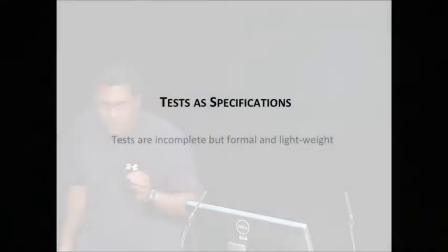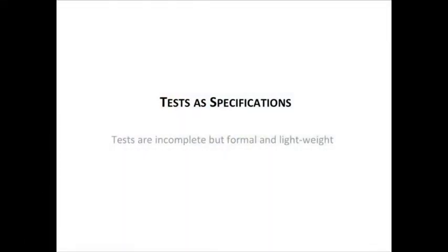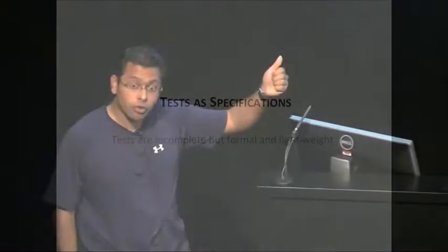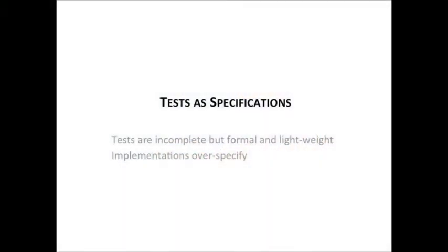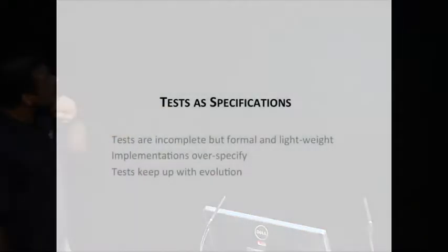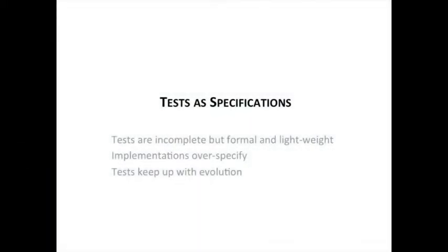So I prefer to think of it this way. Tests are very incomplete, of course. They're only a finite approximation of this big denotation, but they are formal objects, and they're very lightweight. They're easy to write down. They're easy for all sorts of people, even people who don't understand algebra to write down. In contrast, implementations have this problem that they over-specify the behavior. There may be all sorts of consequences of an implementation that may or may not have been intended.